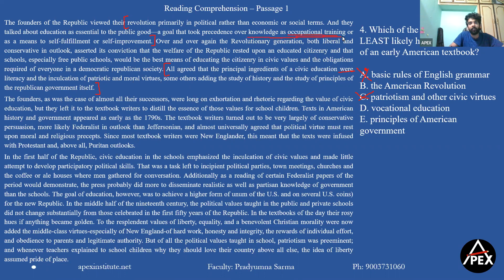We can clearly see that a goal that took precedence over knowledge was occupational training — which is nothing but vocational education. So we are prioritizing everything else over vocational education, meaning vocational education is least likely to be the subject of an early American textbook. I hope all of you are clear with this answer.